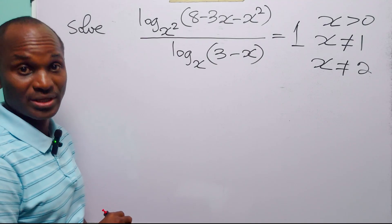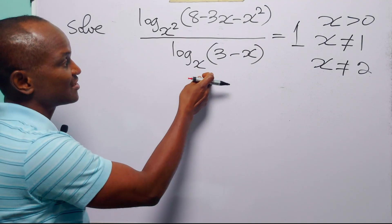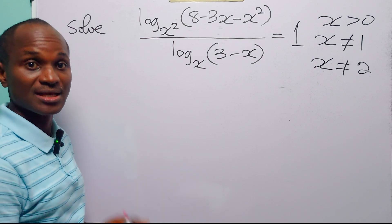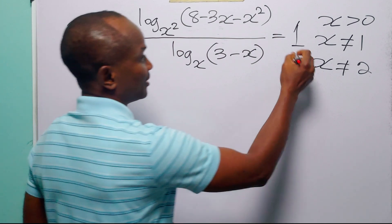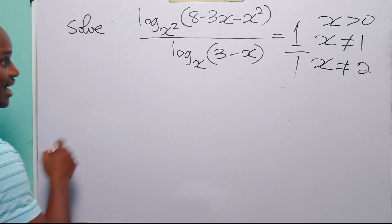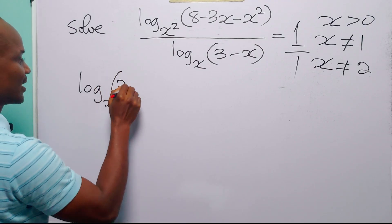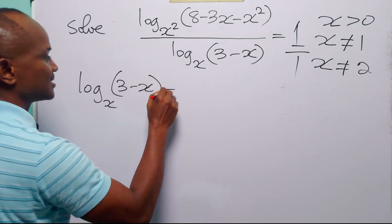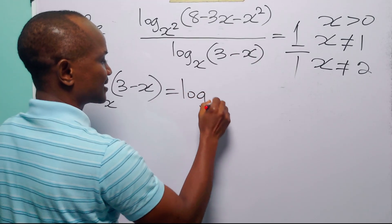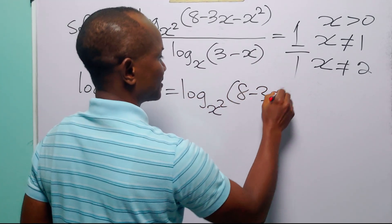Now let us go on to solve this logarithmic equation. The first thing we are going to do is get rid of the fraction on the left-hand side by cross-multiplying. When we cross multiply we have that log base x of (3 minus x) is equal to log base x² of (8 minus 3x minus x²).